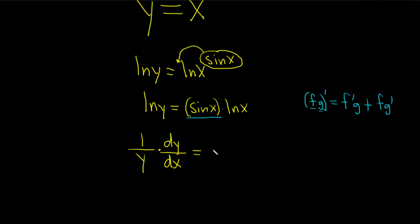So here it's the derivative of the sine, which is cosine. That's the derivative of the first times the second, which is the natural log of x, plus the first, which is the sine of x, times the derivative of the second, so 1 over x.